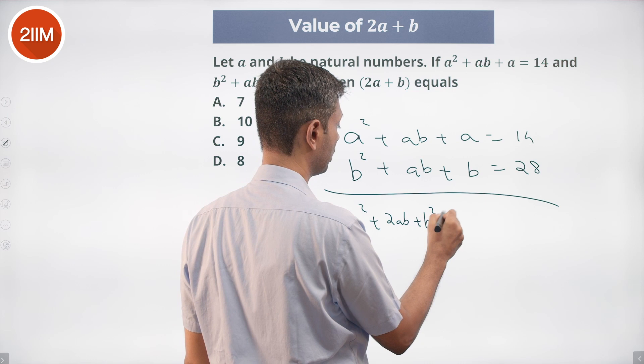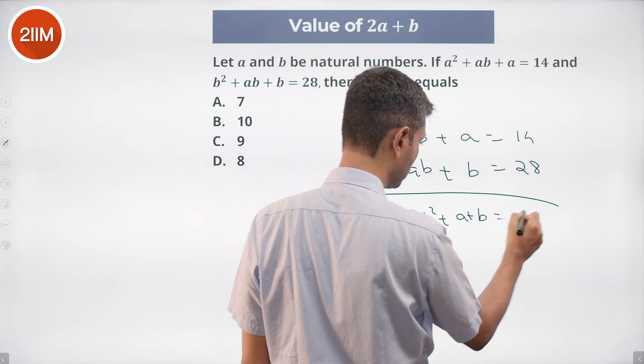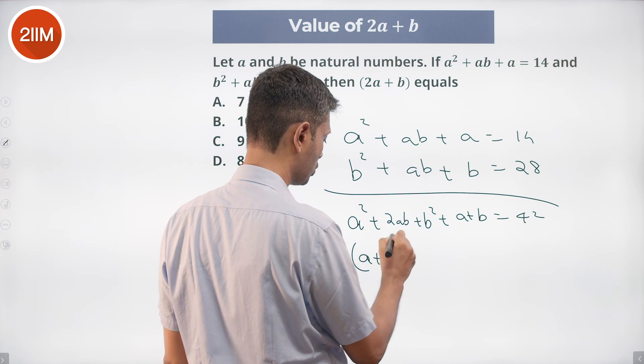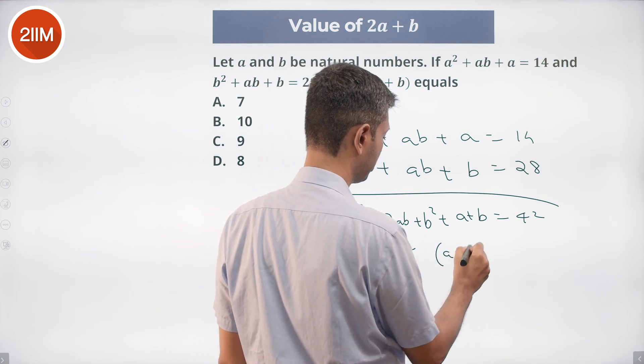Get a squared plus 2ab plus b squared plus a plus b is 42, or a plus b whole squared plus a plus b is 42.